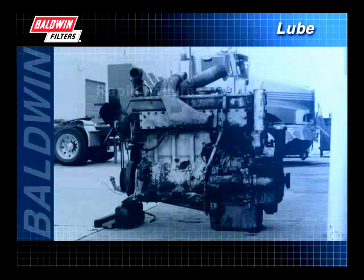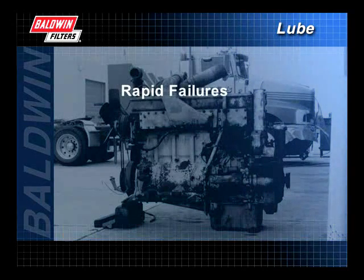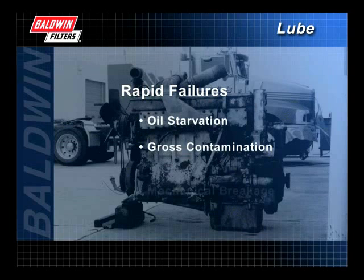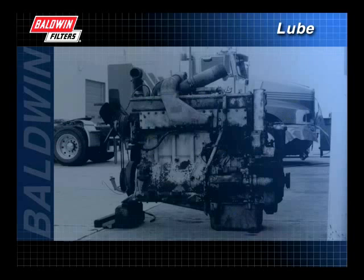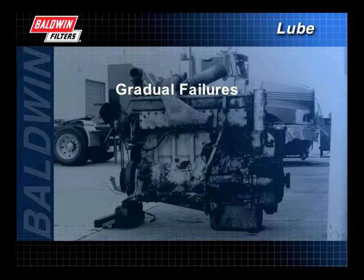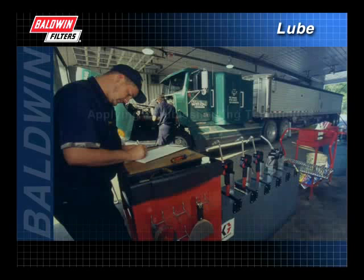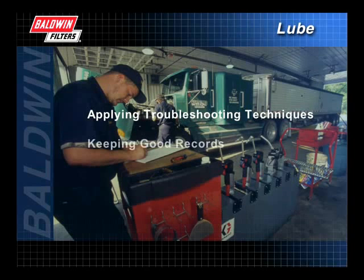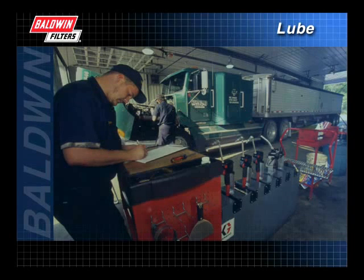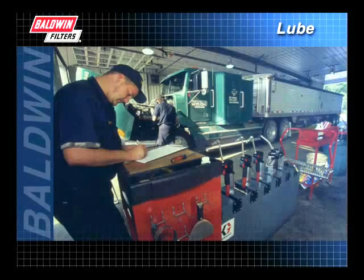Oil-related engine failures generally fall into two categories. Rapid failures are tied to obvious problems like oil starvation, gross contamination, or mechanical breakage. It's more difficult to find a cause for gradual failures — they are characterized by accelerated wear or corrosion resulting from contamination, additive depletion, oil of the wrong weight or classification, or any combination of those causes. By applying some basic troubleshooting techniques, keeping good records, and adhering to maintenance schedules, you can avoid serious breakdowns.